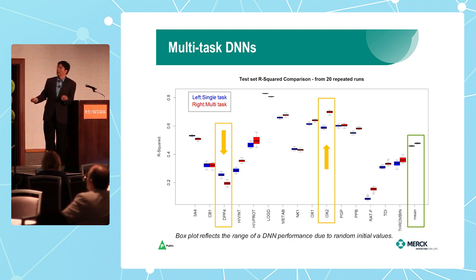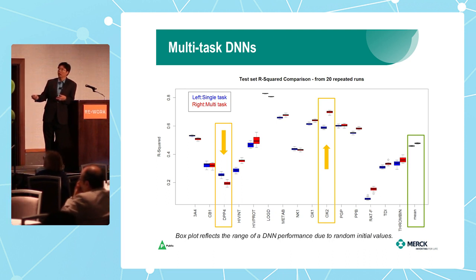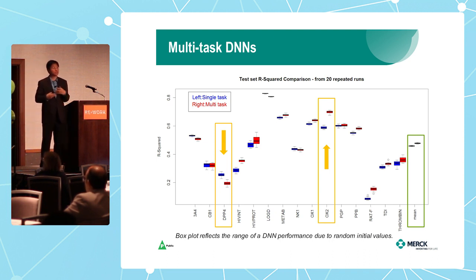Now the second part: multi-task. Why is multi-task good? Here we have 15 data sets. We first train each dataset individually and get a bunch of results. Because deep neural nets randomize initial values, you get different performances — the box plots show the range of performance. Then you train all 15 data sets together in one neural network and test on each particular task. On average, the multi-task approach is better than the single-task approach.